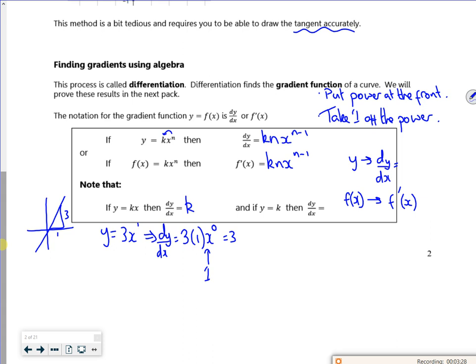So this one says y equals k. So think about this one then. So this would be y, say it was y equals 3, it would be times by x to the power 0. But then if I differentiate it, I would have 3 times 0, times whatever it is. But anything times 0 is 0.